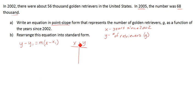So x being the year since 2002. In the year 2002, how many years is that since 2002? Well, zero. And then y is the number of golden retrievers. It says 56,000, but I'm going to put 56, and then I'm going to say this is in thousands.